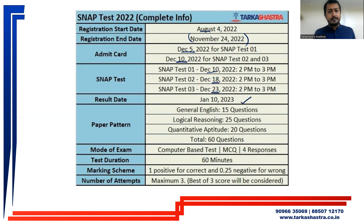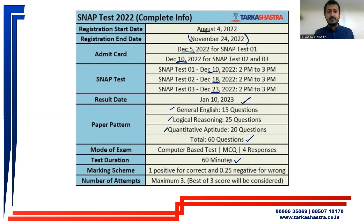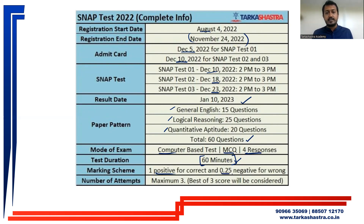The result date is 10th of January. The paper pattern consists of English, Logical Reasoning, and Quantitative Aptitude — 15, 25, and 20 questions respectively, totaling 60 questions in 60 minutes. This is the same paper pattern as last year. The mode of exam is Computer Based Test, MCQ format with four options, +1 for correct and -0.25 marking scheme. You can take a maximum of three attempts and the best of three scores will be considered.